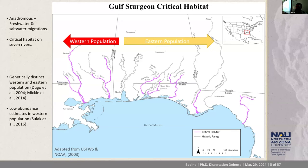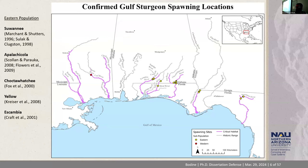The western population in particular has a small population, and it's estimated that their abundance is well below carrying capacity. Very little is known about spawning behavior in these river systems. Multiple studies throughout the years have located Gulf Sturgeon spawning sites — many have been located in the eastern population. However, we only have one confirmed spawning site in the Bowie River for the western population.